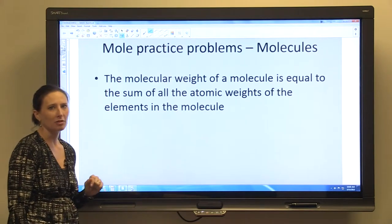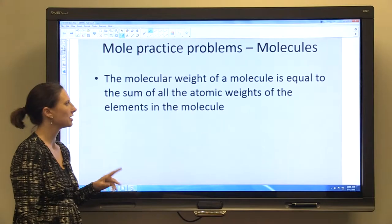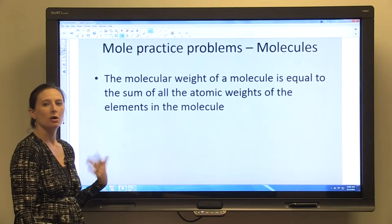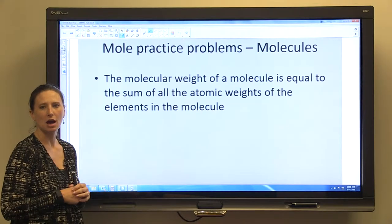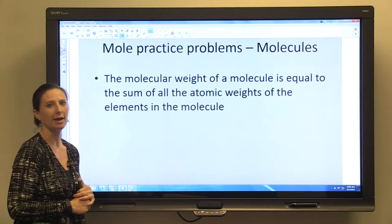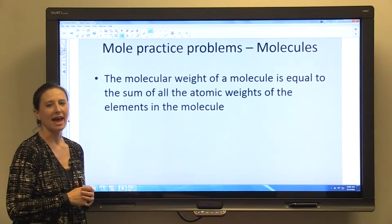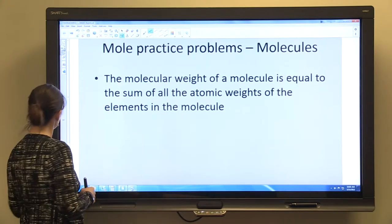The molecular weight of a molecule is equal to the sum of all the atomic weights of the elements in the molecule. Before, when we were doing single element problems, we just had to look up the atomic weight and we knew the grams per mole. In a molecule, we're going to have to add up all the atomic weights so that we know the grams per mole of a molecule.